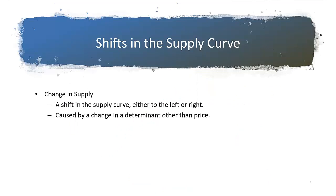The shift of the supply curve is also called change in supply — note that the word 'quantity' is missing here. A shift in the supply curve is either left or right, and it is caused by a change in a determinant other than the price of the product — anything other than the price.